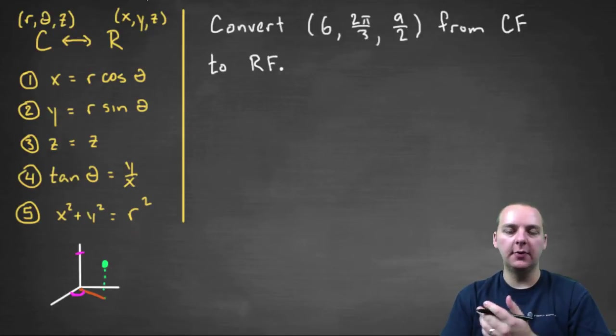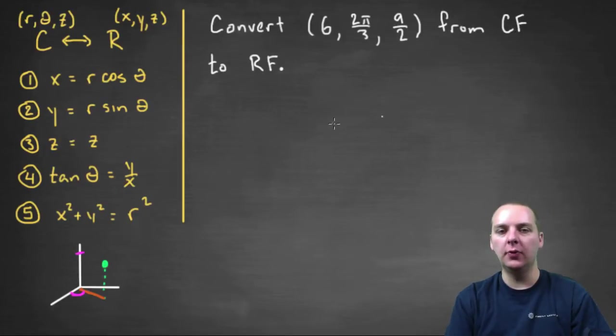In this exercise we're being asked to convert this point from cylindrical form (CF) to rectangular form (RF).